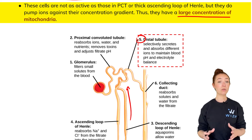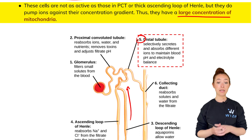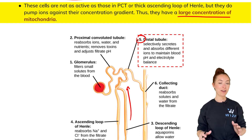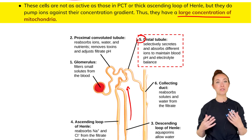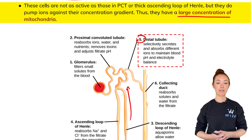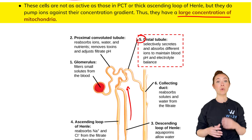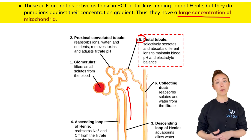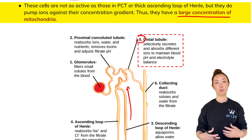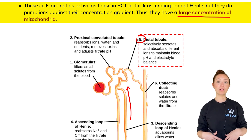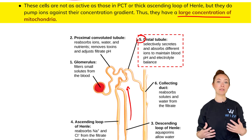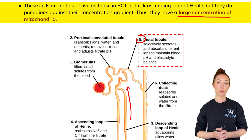That's it for this lesson on the DCT — short and sweet. Just keep in mind that this section of the nephron responds to aldosterone and ADH, and that it's able to reabsorb more electrolytes and secrete potassium and protons.